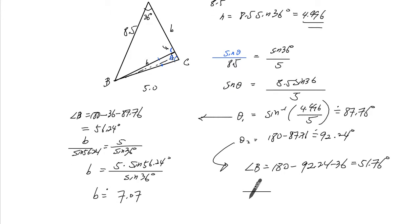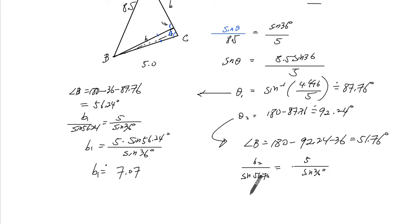Then B, the length B will be, so maybe we should call this one B1, that's the longer B, the shorter B, B2. Sine of 51.76, again, same, 5 over sine of 36. So the shorter B will be 5 times sine of 51.76 over sine of 36. We get 6.68, note that it's a little bit shorter than 7.07.